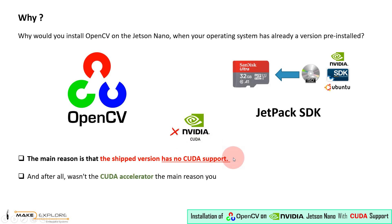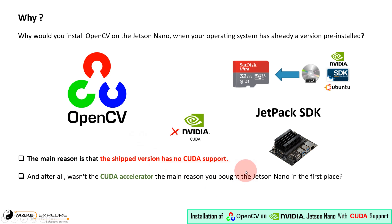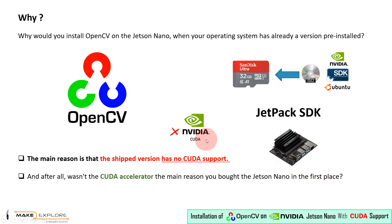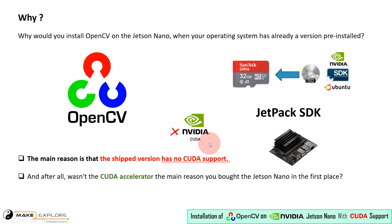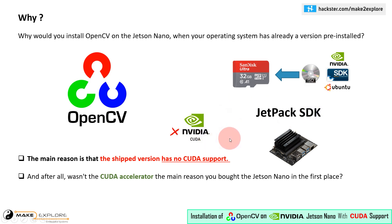After all, the CUDA Accelerator is one of the main reasons we bought the Jetson Nano, isn't it? So if there is no CUDA support for OpenCV, then what's the benefit of the 128 CUDA cores of Jetson Nano? What's the benefit if those CUDA cores are not utilized for the tasks for which they were originally included? So in this video tutorial, we will see how to install OpenCV on Jetson Nano with CUDA support. It will also support CUDA DNN — CUDA Deep Neural Networks.